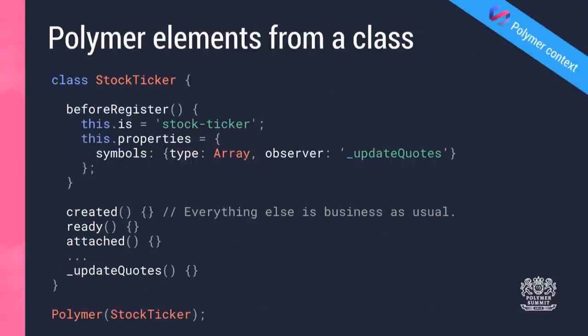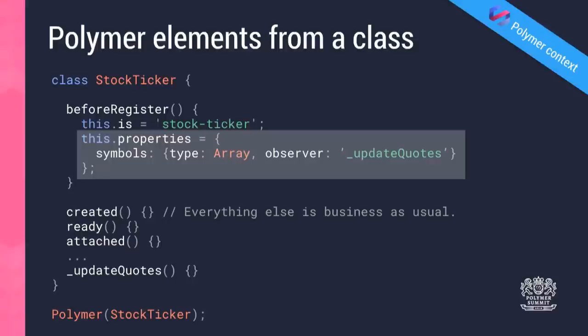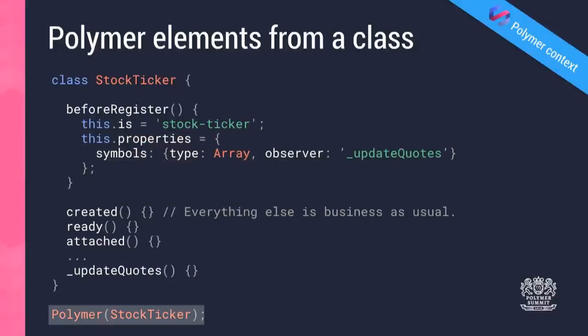So it's really easy to define custom elements with a class, but how do you define a Polymer element from a class? That's also really easy. First: class StockTicker — same as before, but this time we're not extending HTMLElement because Polymer does that for us under the hood. The second thing is to tap into the special beforeRegister method, which Polymer calls before the element goes through its upgrade process. This is where you put the good stuff: define your element name, stock-dash-ticker, and set up your properties object — for example a symbols array and an observer. From there the rest is traditional Polymer code: created, ready, attached callbacks and your updateQuotes method. Finally, instead of document.registerElement, you call the Polymer constructor and pass it the class.